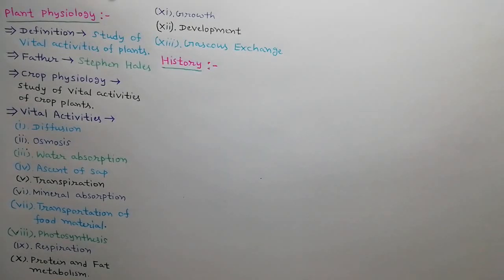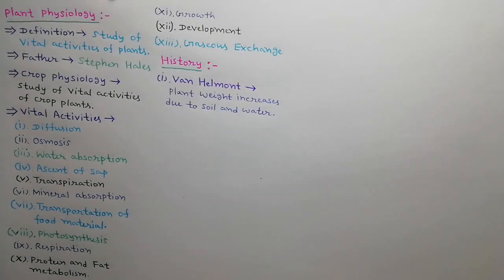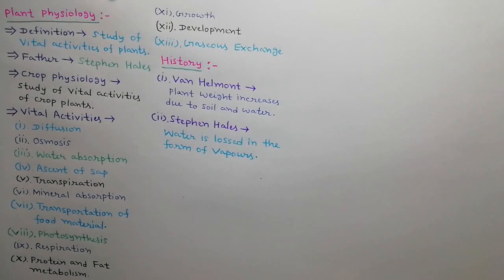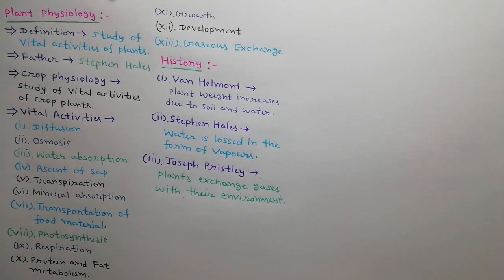Next, we will discuss the history of plant physiology. Van Helmont first discovered that plant weight increases due to soil and water. Stephen Hales stated that in plants, water is lost in the form of vapors. Joseph Priestley first discovered that plants exchange gases with their environment.